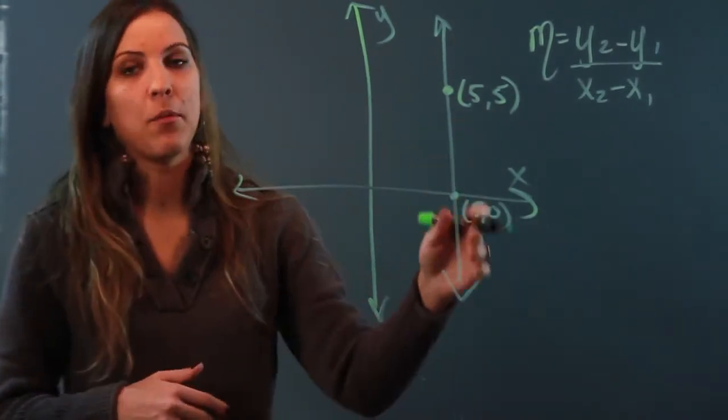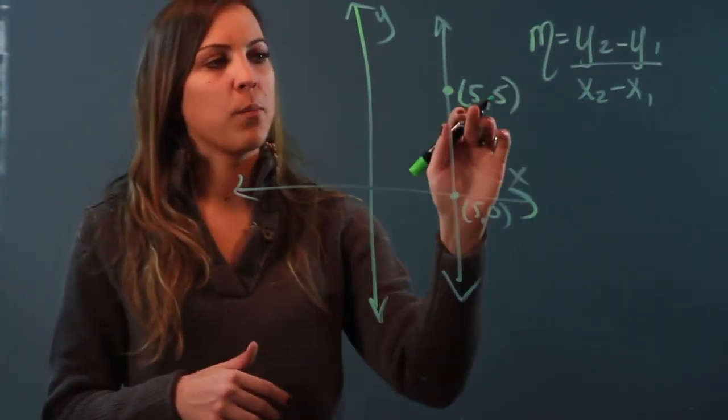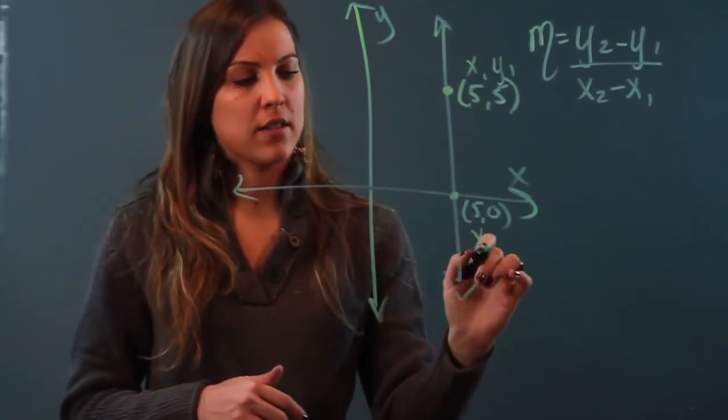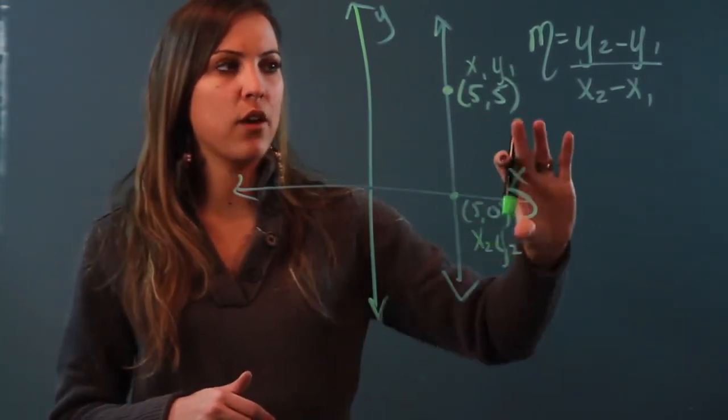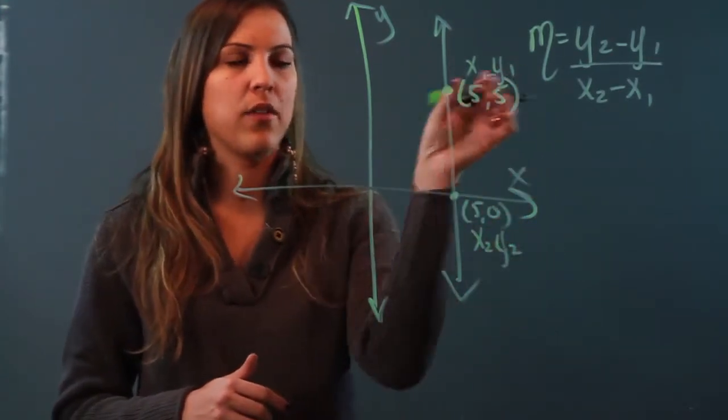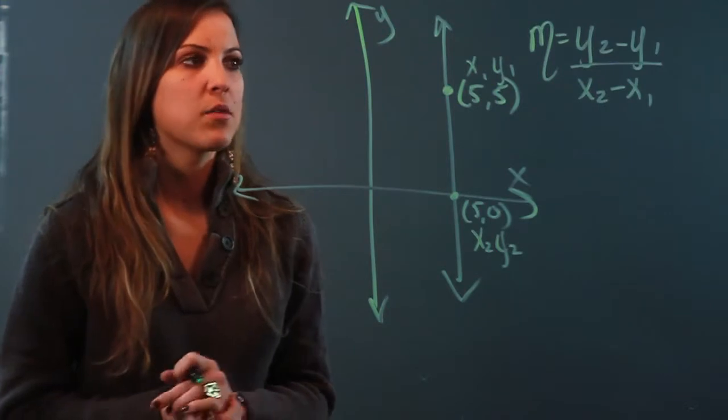I'm going to label my ordered pairs so I know which one is which. So I'm going to call this first one up here x1 and y1, and down here x2, y2. It wouldn't matter if I switch them around, the labels, but the 2's have to be together and the 1's have to be together. Now I'm just going to substitute.